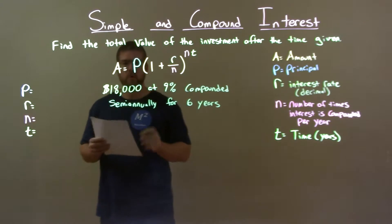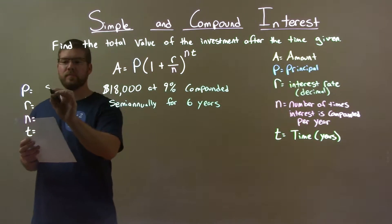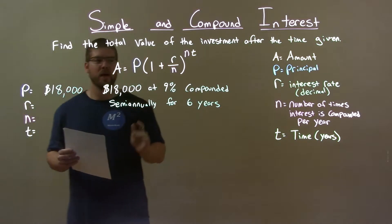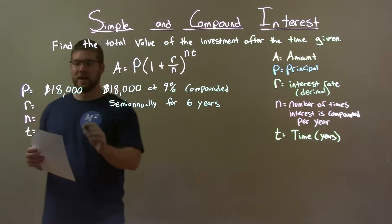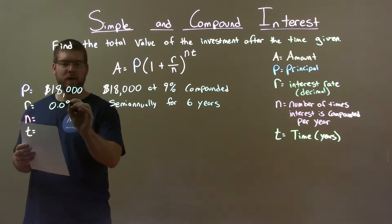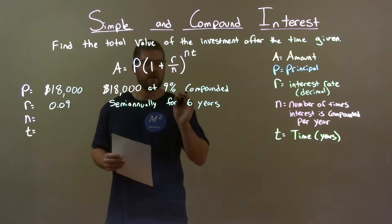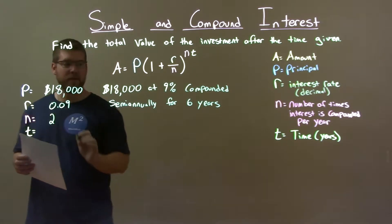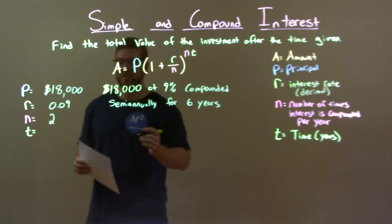So let's extract our information. Principle, easy to find, $18,000. That's what we're starting with. Our interest rate, 9% as a decimal, 0.09. Compounded, the number of times we're compounding is semi-annually. That means it's 2 times in a year. For a total of time in years, 6 years.